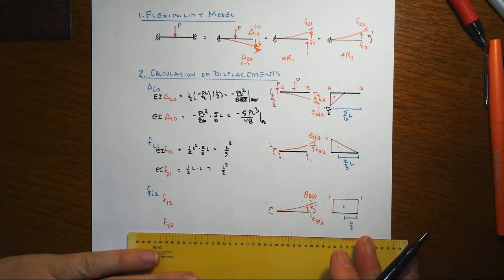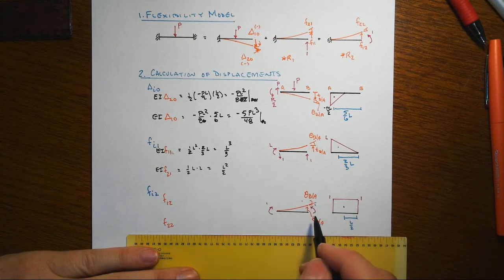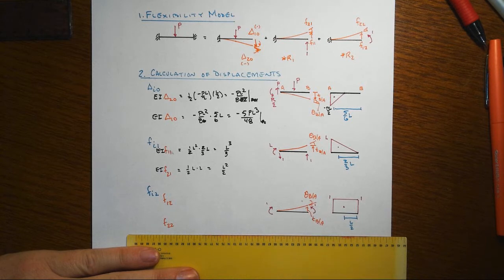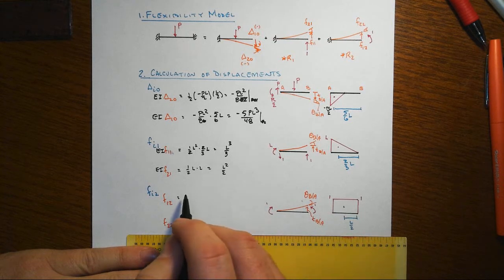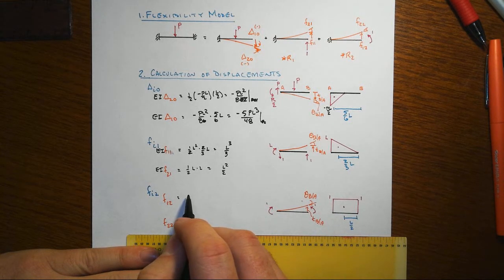And finally we have the same kind of thing down here. Now we put a unit moment on, still the same overall process, that F12 is a tangential deviation of the M over EI area in its first moment.